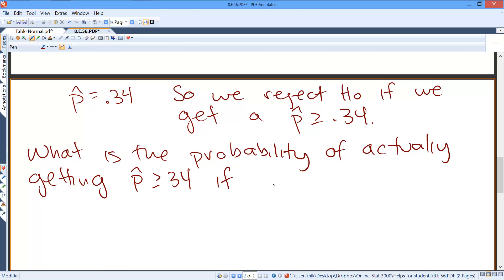Now we're looking for what is the probability of actually getting p-hat greater than or equal to 0.34 if our population proportion really is 0.5. Now we get to go back a few lessons. And the probability that p-hat is greater than or equal to 0.34 is equal to the probability that we need to standardize.